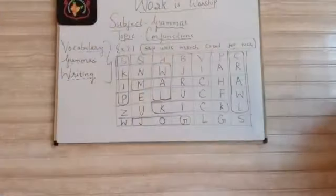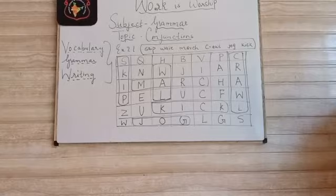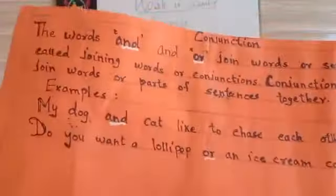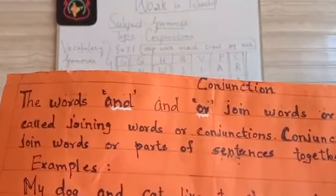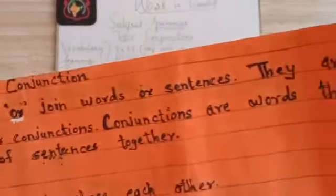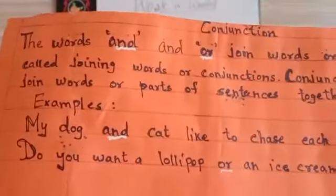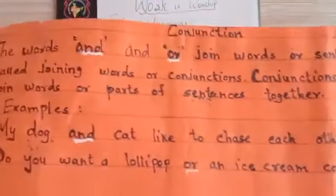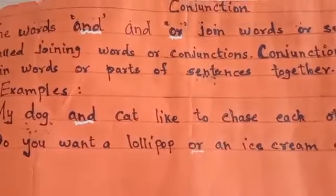We have finished with our vocabulary, and now we will be doing conjunctions again. So what are conjunctions, children? The words 'and' and 'or' join words or sentences — they are called joining words or conjunctions. Conjunctions are words that join words or parts of sentences together. Examples: 'My dog and cat like to chase each other.' 'Do you want a lollipop or an ice cream cone?' In these sentences, 'and' and 'or' are the conjunctions.